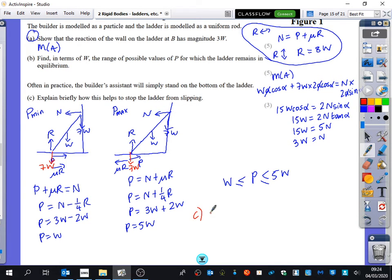And the reason it wouldn't change is because if you took moments about A, the extra force from the builder would not affect the value of N. And the reason I'm interested in the value of N, because if the value of N is bigger than some of these forces down here, it's going to mean that the ladder is going to slip.